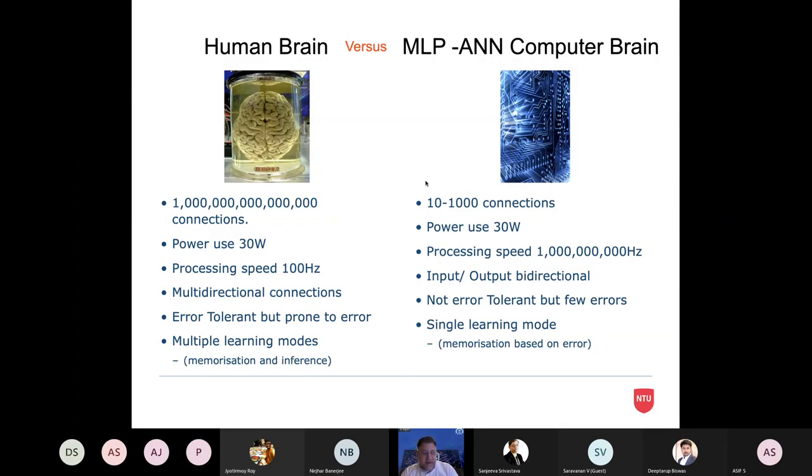Now, the human brain is very error tolerant. I've never seen anybody crash or have a blue screen event. Computers can suffer errors and they don't deal well with errors. They have to shut down and restart. The human brain doesn't need to do that. And the human brain has many learning modes. It can memorize things, infer things, extrapolate, interpolate. Whereas really with a computer brain, it's memorization and based upon error, a single learning mode.